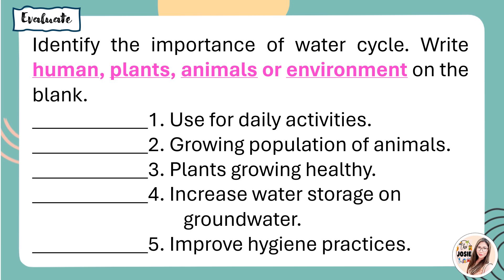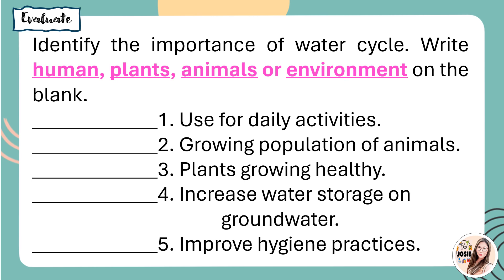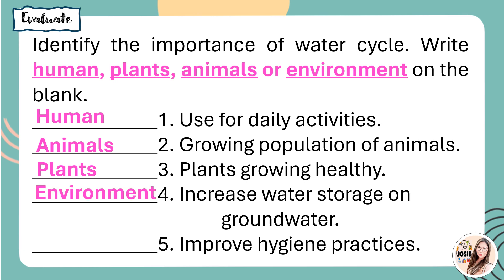For better understanding, please answer this in your notebook. Identify the importance of the water cycle — write human, plants, animals, or environment in the blank. Let's check your answers. Number one, use for daily activities — the answer is human. Number two, growing population of animals — it is animals. Number three, plants growing healthy — it is for plants. Number four, increase water storage on groundwater — the answer is environment. Number five, improve hygiene practices — the answer is humans. I do hope you got a perfect score.